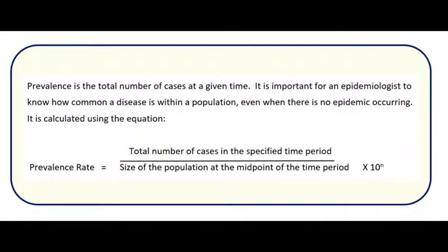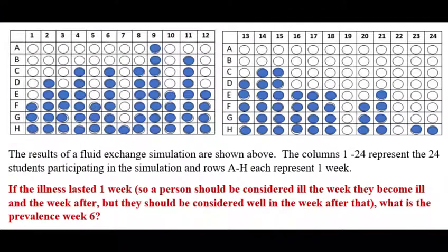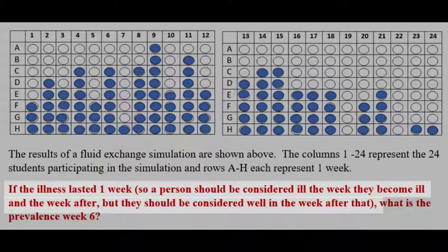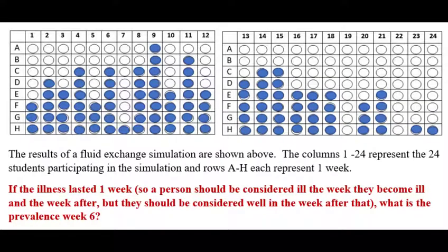Let's try that calculation with our simulation. What's the prevalence for week 6? Week 6 is row F. We were told that the disease lasts one week and we should consider an individual ill the week that they come down with it and the following week only. So if we're looking at row F, would person 1 be counted as ill? Yes. Would person 2 be counted as ill? No. If you're thinking that they would be counted, remember that we're asked only who's sick during that week. They're sick the week they get it — for person 2, that would have been week 4, and the following week would be week 5. After that, they're not ill anymore, so they don't get counted as being ill during week 6.